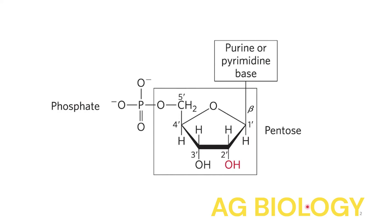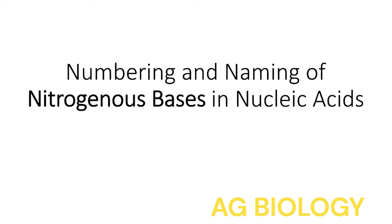The fundamental unit of a nucleic acid such as DNA and RNA is a nucleotide. A nucleotide has three main components: a nitrogenous base, a pentose sugar, and one or more phosphate molecules. Today in this video we are discussing the naming and numbering of nitrogenous bases.